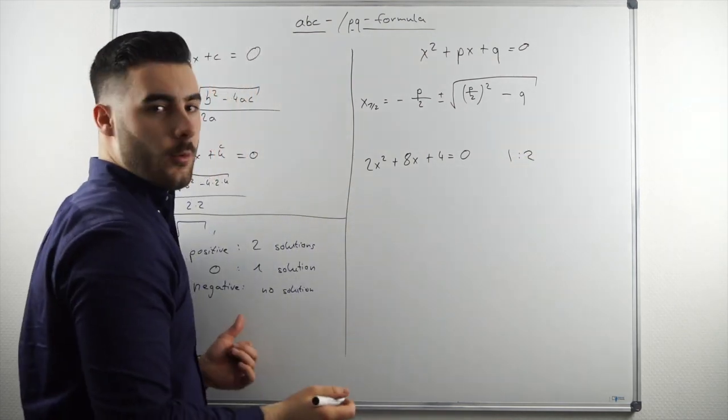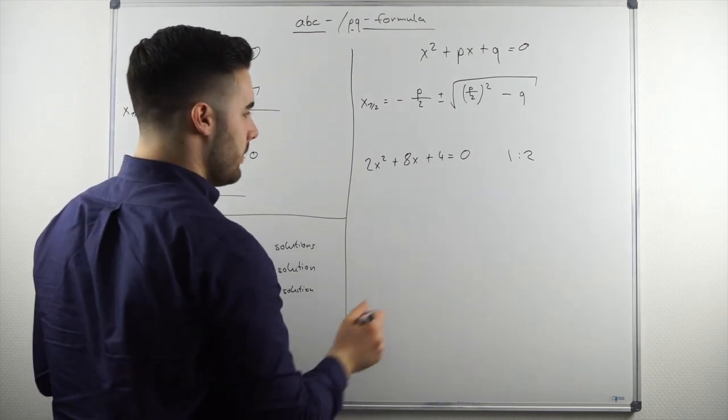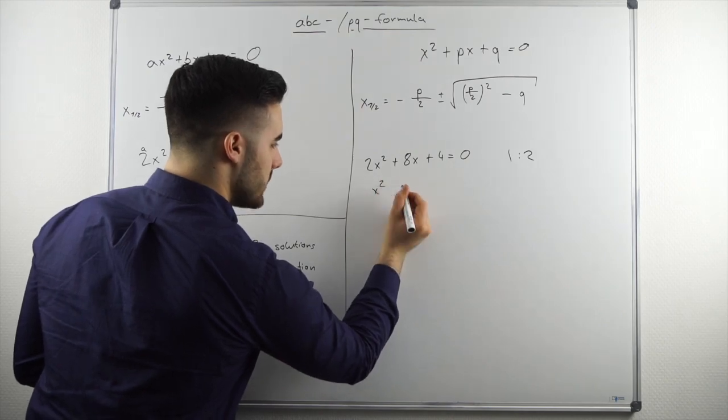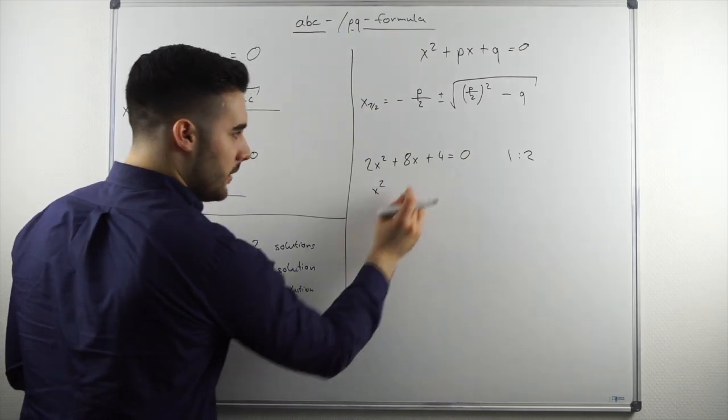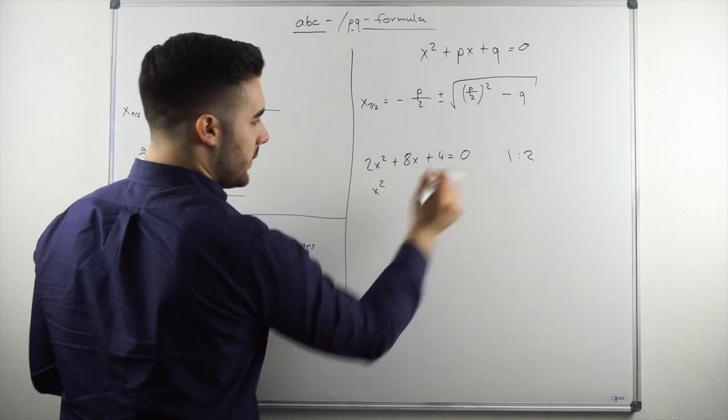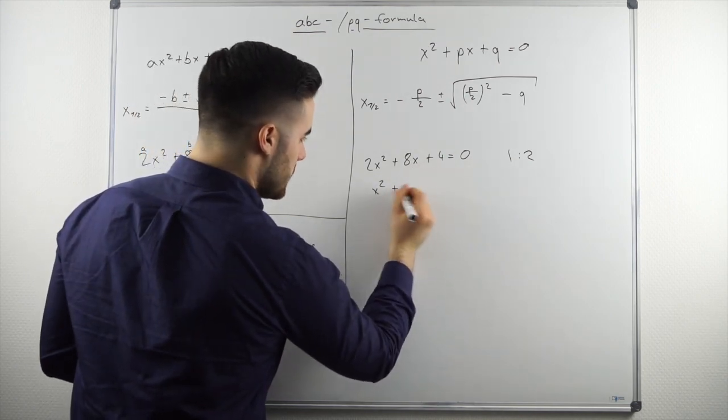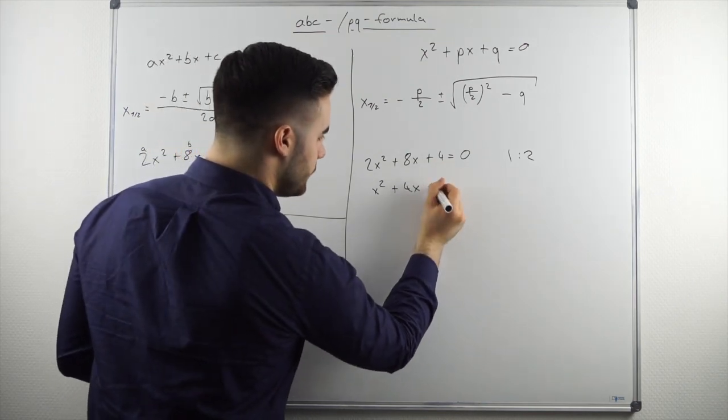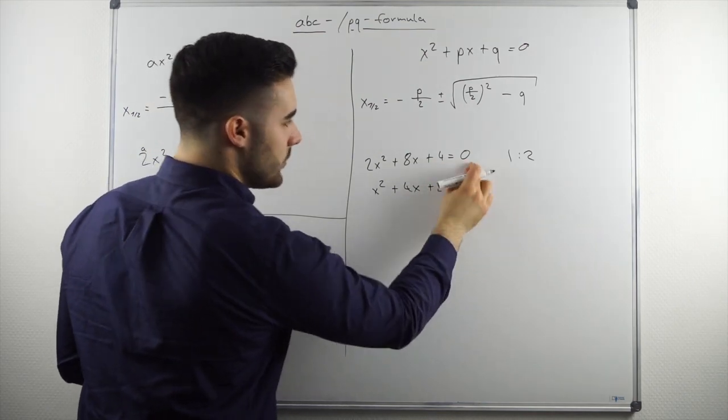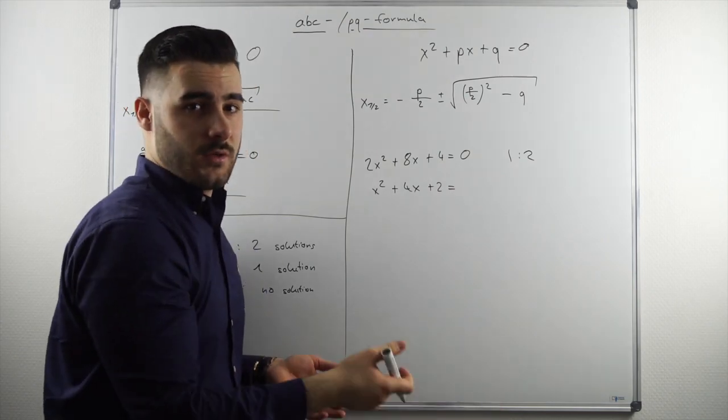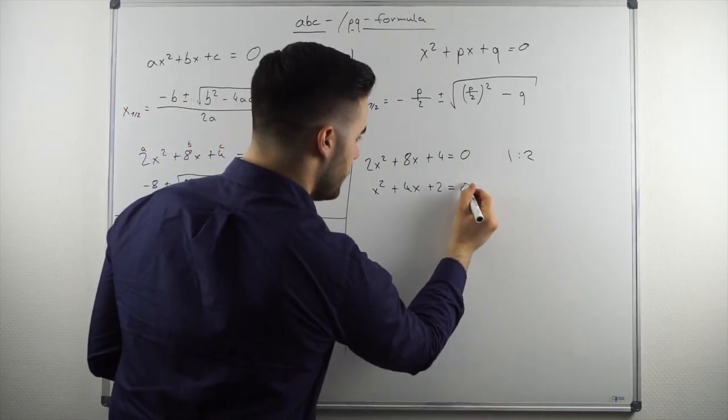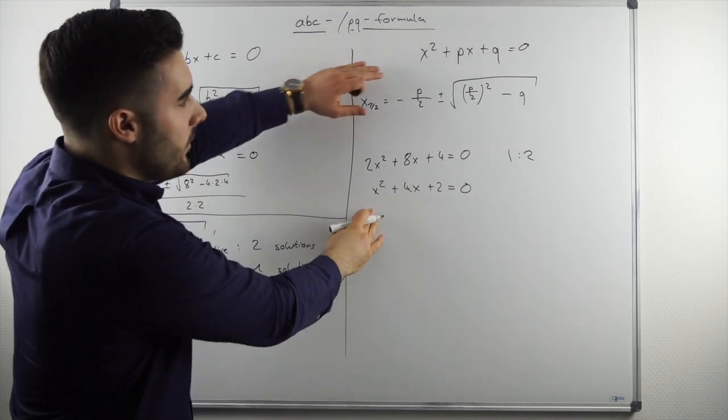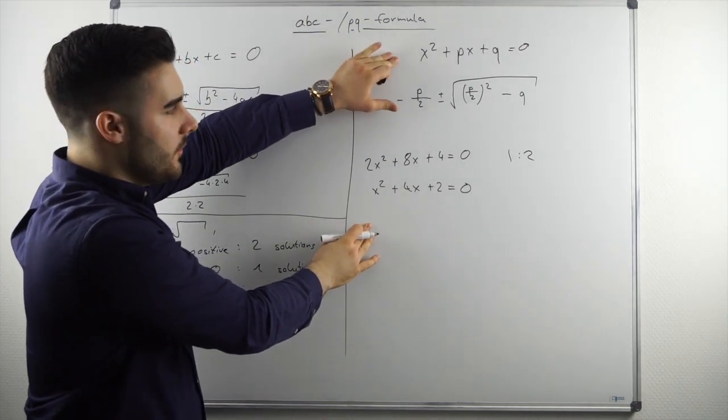And with that, what are we able to achieve? We are able to rewrite the function. So two divided by two is one. So we will have x squared in the beginning. Eight divided by two is four x. And two divided by two is two. Equal to zero divided by two. Zero divided by anything is always zero. And then we basically just have our form that we also need for the PQ formula.